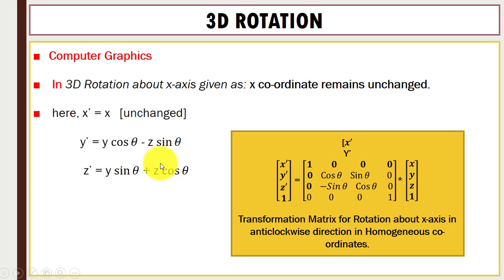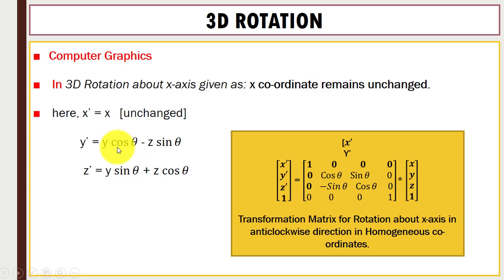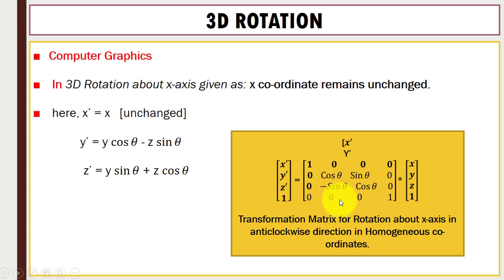For 3D rotation about the x-axis, the x-coordinate remains unchanged. For y-dash, we apply 2D rotation on the y-z plane: y-dash = y·cos(θ) − z·sin(θ). And z-dash = y·sin(θ) + z·cos(θ). These give the coordinate positions for rotation about the x-axis in the anticlockwise direction.